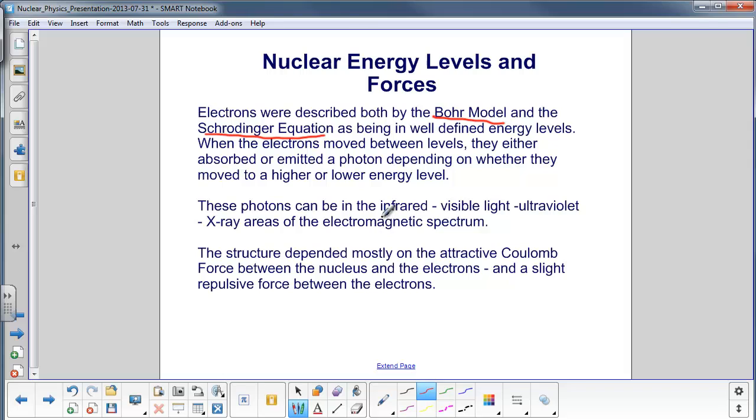These photons can be in the infrared, visible light, ultraviolet, or x-ray areas of the electromagnetic spectrum. The structure depended mostly on the attractive Coulomb force between the nucleus and the electrons, and a slight repulsive force between the electrons.